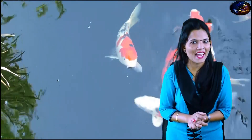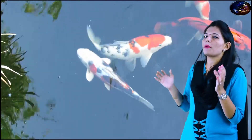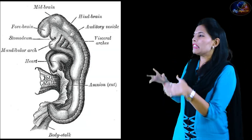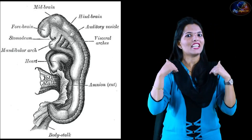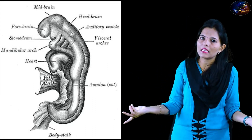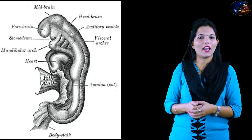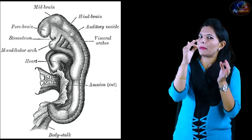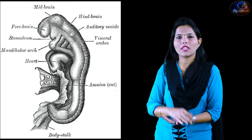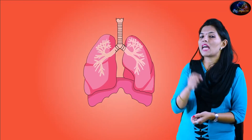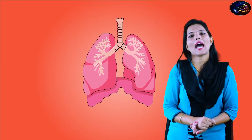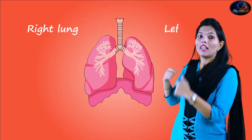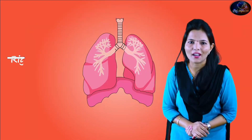When you are in the embryo stage, the gill slits are present. But why are gill slits present in the embryo? Because during the baby stage, the gill slits are converted into lungs.